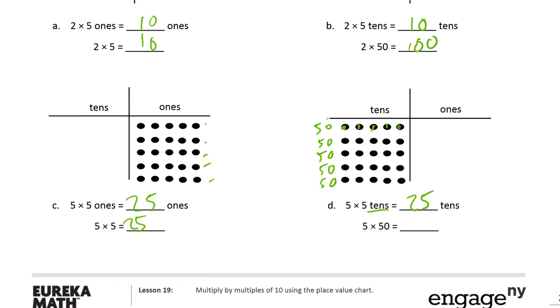And these fifties, if you don't believe me, there's a hundred, that's two hundred and fifty. Twenty-five tens is two hundred fifty.